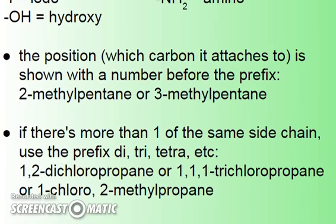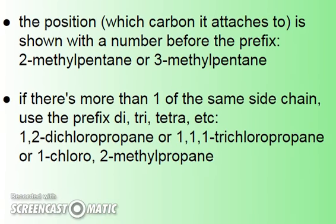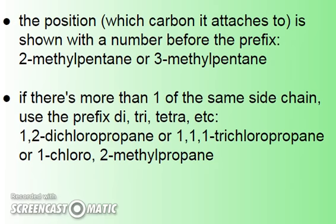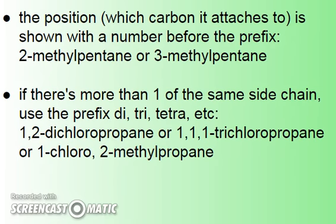The position where the functional group, side chain, or substitution is attached is shown with the number before the prefix name — like 2-methylpentane or 3-methylpentane. If there's more than one of the same side chain, we use the prefix di-, tri-, tetra-, etc. — so 2,3-dimethylpentane instead of just 2-methylpentane.